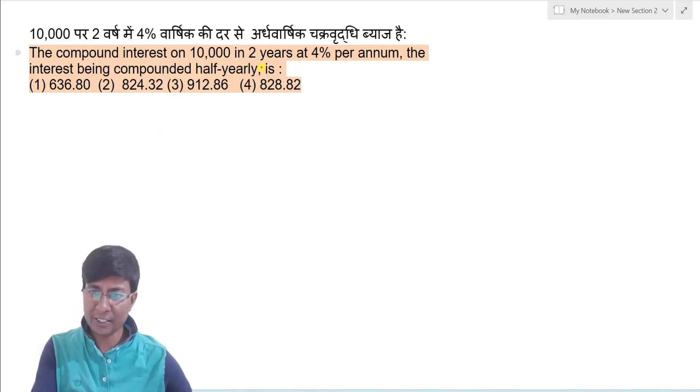The compound interest on Rs 10,000 in two years at 4% per annum, the interest being compounded half yearly.